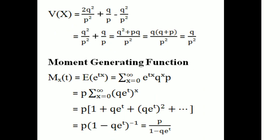Then variance of x = 2q²/p² + q/p - (q/p)² = q²/p² + q/p = (q² + pq)/p² = q(q + p)/p² = q/p². So the mean of the geometric distribution is q/p and the variance is q/p².